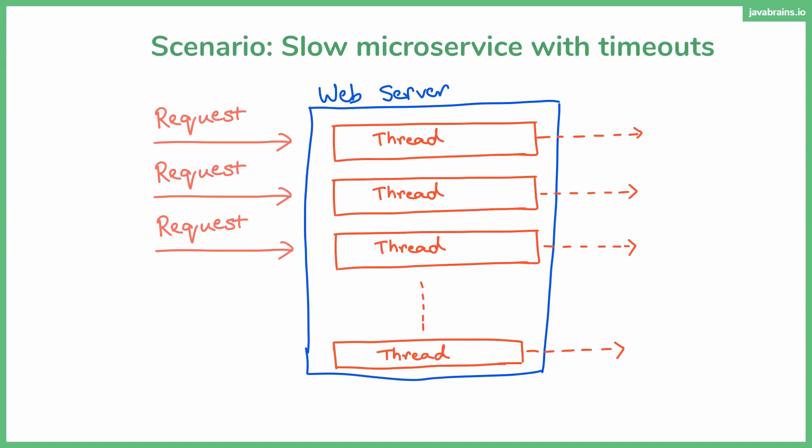Now, when you have a timeout that is set for, let's say three seconds, right? A thread is going to wait for three seconds when there is a call to a slow microservice. If it doesn't respond within three seconds, it ends the thread.